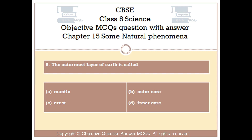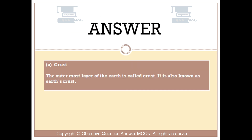The right answer is Option C — Crust. The outermost layer of the earth is called crust. It is also known as earth's crust.